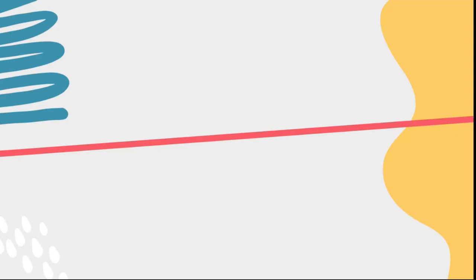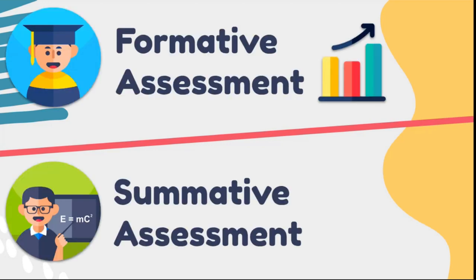Let's start with what formative and summative assessments are. In the schooling environment we get two types. Formative assessment is what we do in the classroom — class activities, quick pop quizzes — just to see if learners understand the work, to find out strengths and weaknesses, and which topics they grasp or don't. Summative assessment, on the other hand, is the exams and formal assessments — the ones you get marked on, the ones that say whether you're passing or failing the grade, subject, or module.